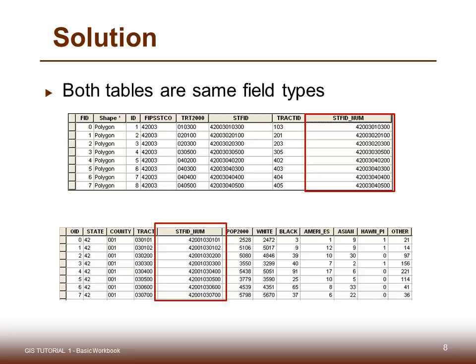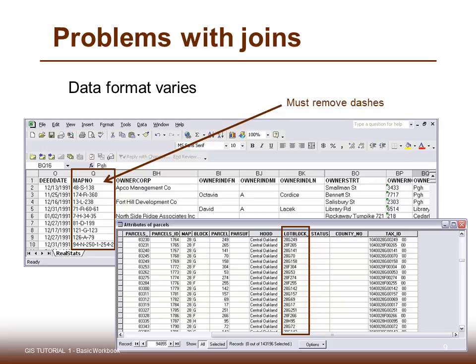One of the problems you may find with joins is that data format may vary, especially when bringing in data from Excel spreadsheets, which may have all sorts of different conventions for entering data. Dashes, for example, are not recognized within the database format in ArcGIS and would need to be removed before you could join the data and bring it into ArcMap.